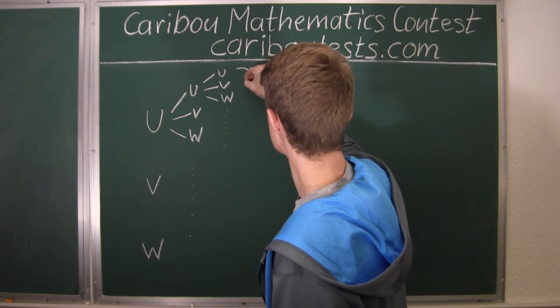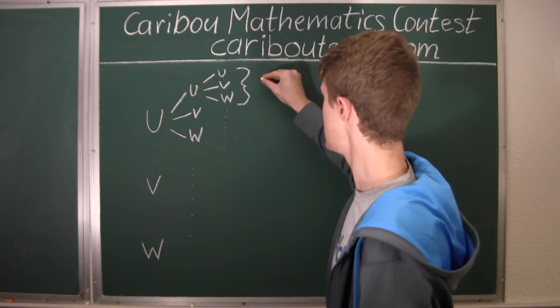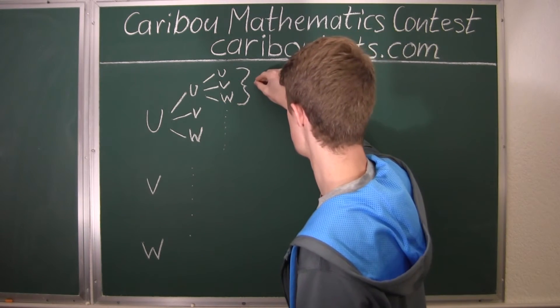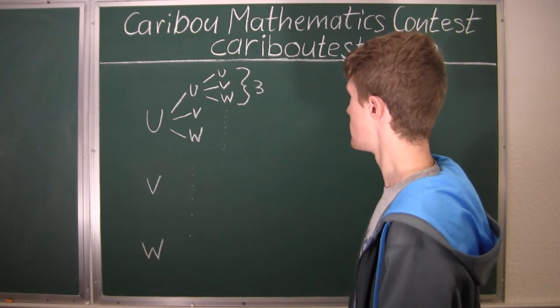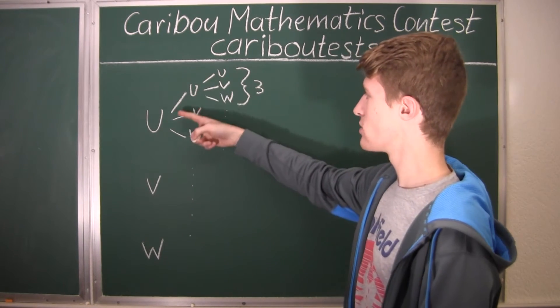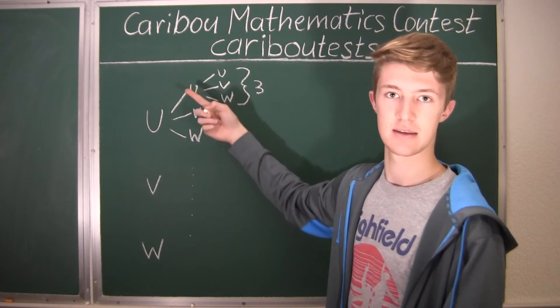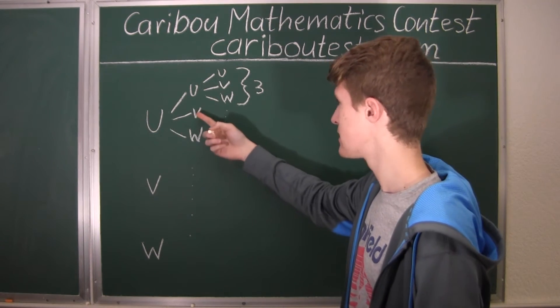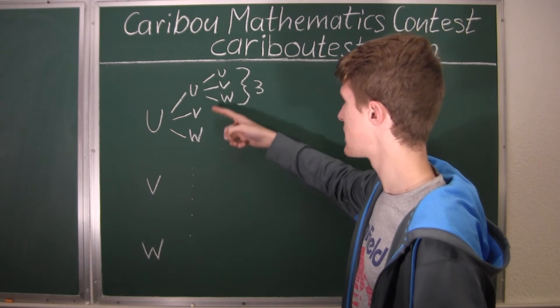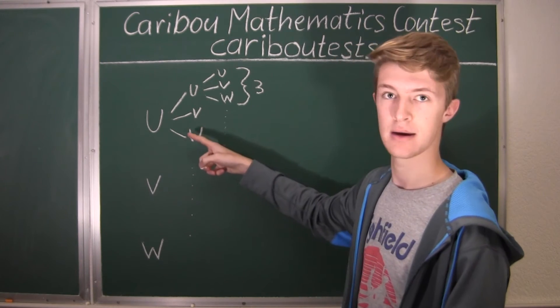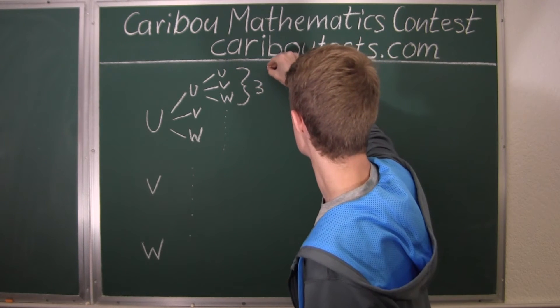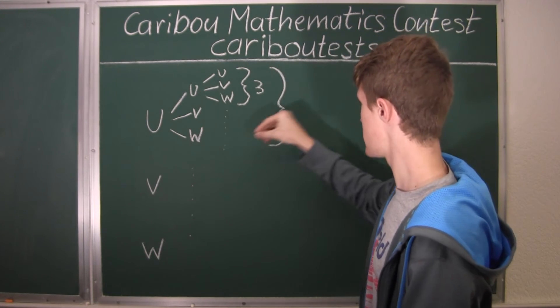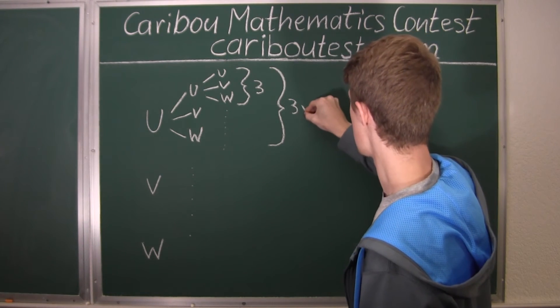So what we have here is three combinations with U U: we can have U U U, U U V, and U U W. Now, this is only shown for having U as the second letter, but of course we can also have, for U as the first letter, we can have V as the second letter and W. So we would have 1, 2, 3 times this number. So that would be 3 times 3.